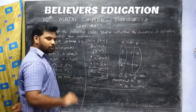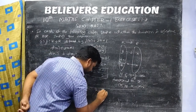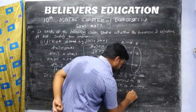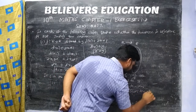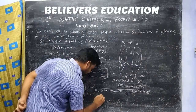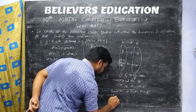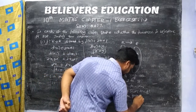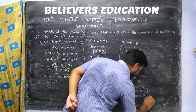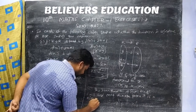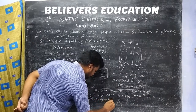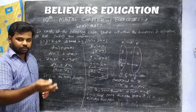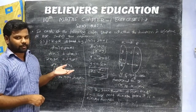One-to-one is proved and onto is proved. Therefore, the given function satisfies both one-to-one and onto conditions. Hence, it is a bijective function.